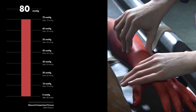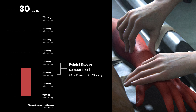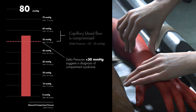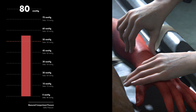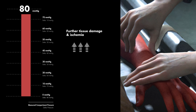Pain typically develops as tissue pressure reaches between 20 and 30 millimeters of mercury. Capillary blood flow becomes compromised when tissue pressures increase further, and ischemia occurs when tissue pressures further approach diastolic blood pressure.